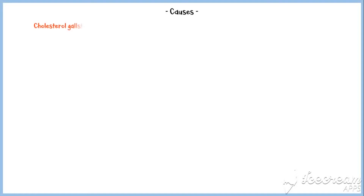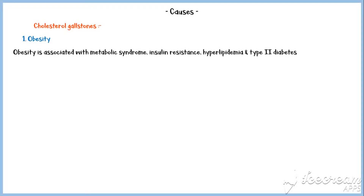Now let's discuss the causes of gallstone disease. As different types of gallstones have different pathogenesis, their etiology also differs. Causes for cholesterol gallstones include obesity. Obesity is associated with metabolic syndrome, insulin resistance, hyperlipidemia, and type 2 diabetes. In all of these conditions, the liver secretes high amounts of cholesterol in bile, which increases the risk of developing gallstones.